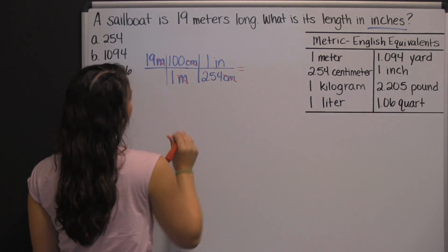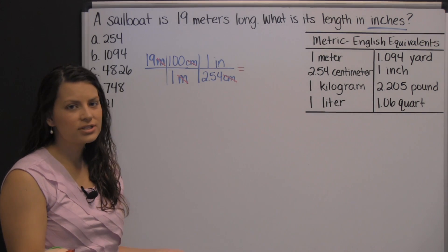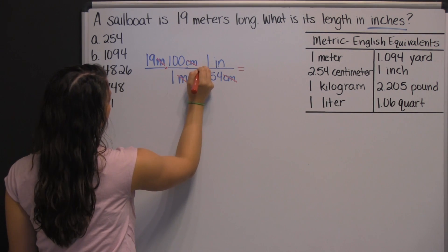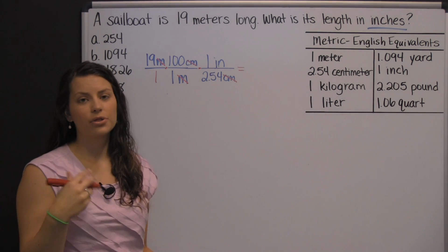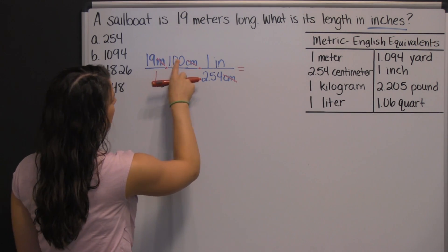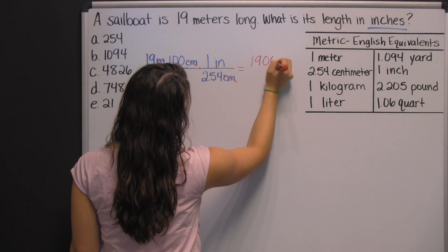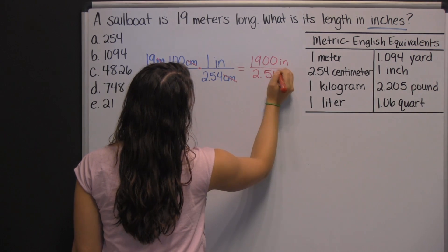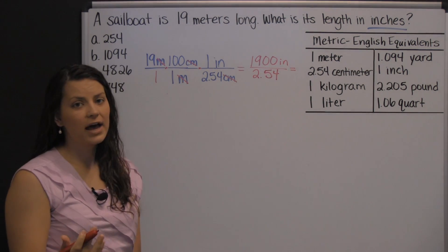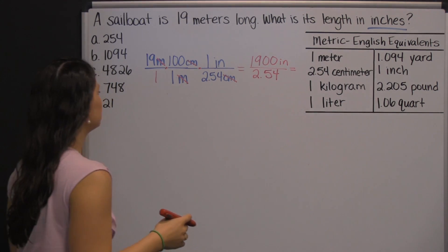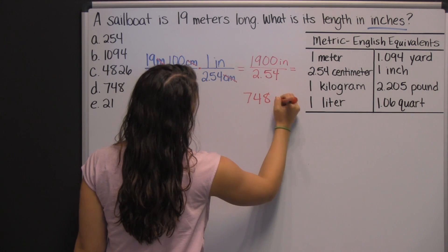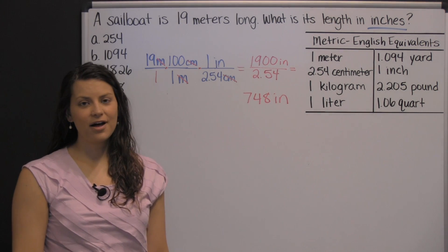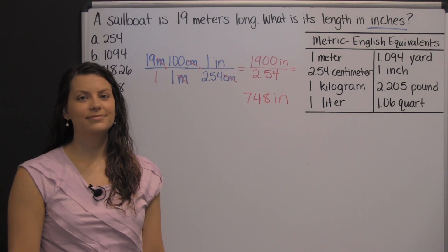Now we just need to multiply. Although this looks kind of weird, these are all just fractions we're multiplying together. Nineteen times one hundred times one is nineteen hundred in the numerator. One times one times two and fifty-four hundredths is two and fifty-four hundredths in the denominator. Now all you have to do is divide nineteen hundred by two and fifty-four hundredths, and that's where you get seven hundred forty-eight inches. There you have one example of converting from one unit to another. Good luck on the HiSET exam.